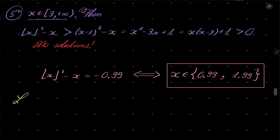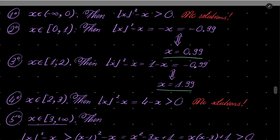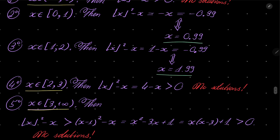Now let's tackle part b. Let a be less than or equal to minus 1. We wish to consider the same equation, but a is on the right-hand side. Let's consider the same cases. Remember that if x is between minus infinity and 0, our function is positive, so our equation in part b has no solutions. Similarly, in cases 4 and 5, our function is also positive. So we have to consider only cases where x is between 0 and 1, and where x is between 1 and 2.